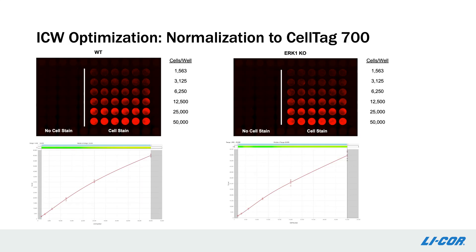The first point of optimization I'd like to discuss is normalization. As is the case with western blots, a normalization step is critical to obtaining quantitative data from an in-cell western assay. In an in-cell western, target signal is normalized to the number of cells per well, which is inherently variable. For normalization, LI-COR has traditionally used CellTag 700. In the ERK phosphorylation experiment, HeLa cells and ERK-1 knockout HeLa cells were used. As you can see from cell dilution experiments of both cell lines, we see good linearity through 25,000 cells, after which point the cells are far overconfluent.